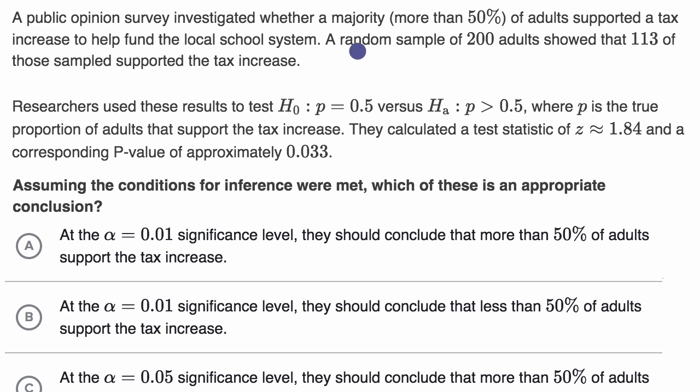So what we do is we have this population and we are going to sample it. So n equals 200. From that sample, we calculate a sample proportion of adults that support the tax increase. We see 113 out of 200 support it, which is equal to 56.5%.